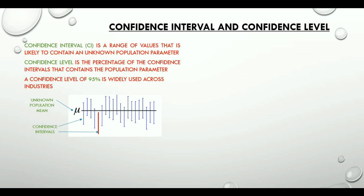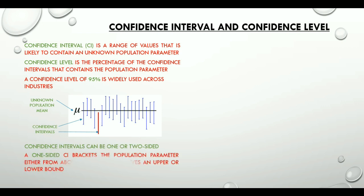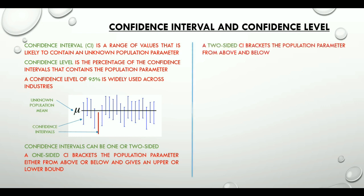Just like hypothesis tests, confidence intervals can also be one or two-sided. A one-sided confidence interval bounds the population parameter either from above or below, thus giving it an upper or lower bound. A two-sided confidence interval bounds the population parameter from above as well as below.